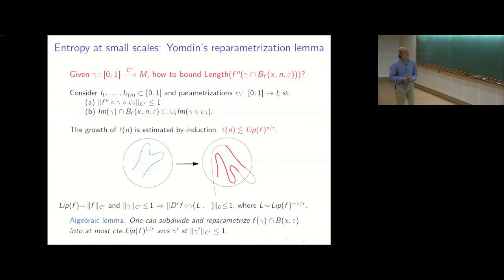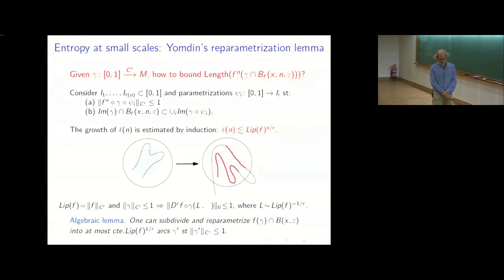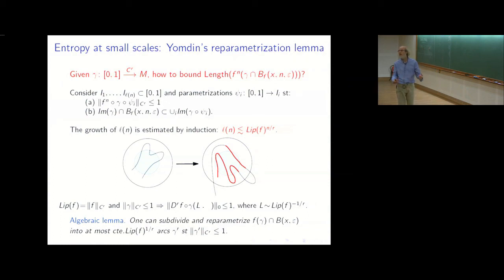This finishes the idea about Yomdin techniques in dimension one, and basically concludes what I wanted to say in this mini-course. What's next: we are still working on this kind of system with Jérôme Buzzi and Omri Sarig. The next natural goal is to understand better the stochastic properties of those measures, and we hope to prove soon that the measure maximizing the entropy on surfaces satisfies the central limit theorem and also has exponential mixing. Thank you for your attention.